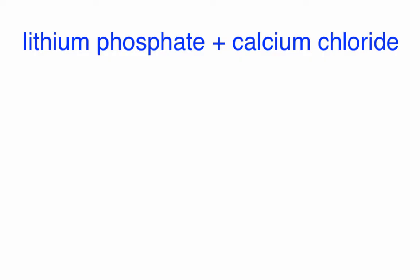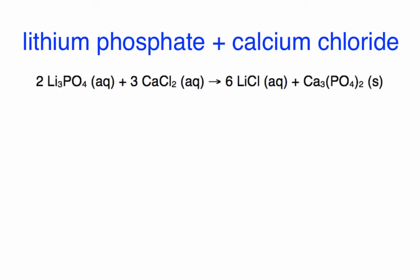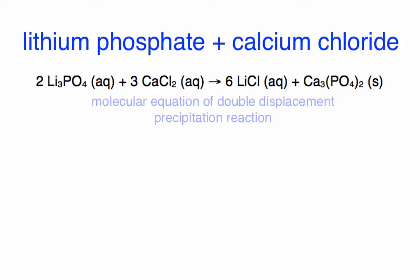Let's write the double displacement precipitation reaction between lithium phosphate and calcium chloride. You can pause the video to write the balanced equation — don't forget to include the states. Your molecular equation for this reaction should look like this: two moles of lithium phosphate (aq) reacts with three moles of calcium chloride (aq) to form six moles of lithium chloride (aq) and one mole of calcium phosphate (s). This is the molecular equation because all reactants and products are written as neutral compounds.